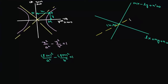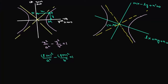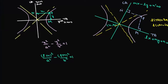For these transverse and conjugate axes, we draw asymptotes and the hyperbola, and take a point P. The perpendicular distance from P to the conjugate axis is Pn, and the perpendicular distance to the transverse axis is Pm. Suppose the length of the transverse axis is 2a and the length of the conjugate axis is 2b. Then the equation can be written as Pn²/a² - Pm²/b² = 1.